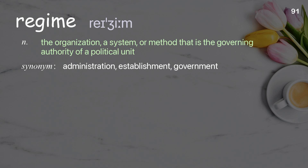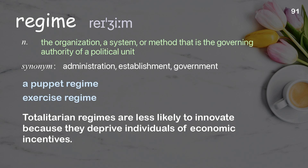Regime: The organization, a system, or method that is the governing authority of a political unit. Examples: A puppet regime. Exercise regime. Totalitarian regimes are less likely to innovate because they deprive individuals of economic incentives.